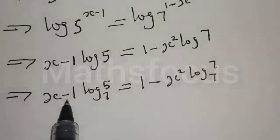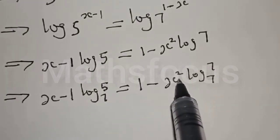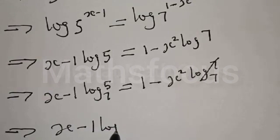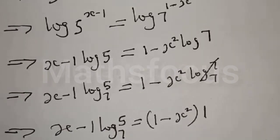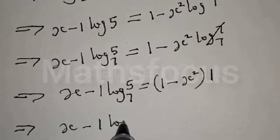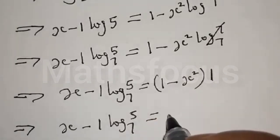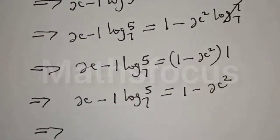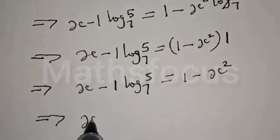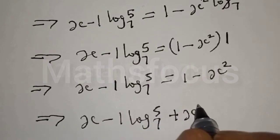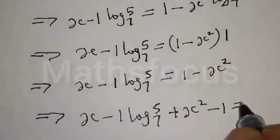We have x minus 1 times log base 7 of 5 equal to 1 minus x squared times log base 7 of 7. This gives x minus 1 times log base 7 of 5 equal to 1 minus x squared. Let's equate to zero: we have x minus 1 times log base 7 of 5 plus x squared minus 1 is equal to 0.